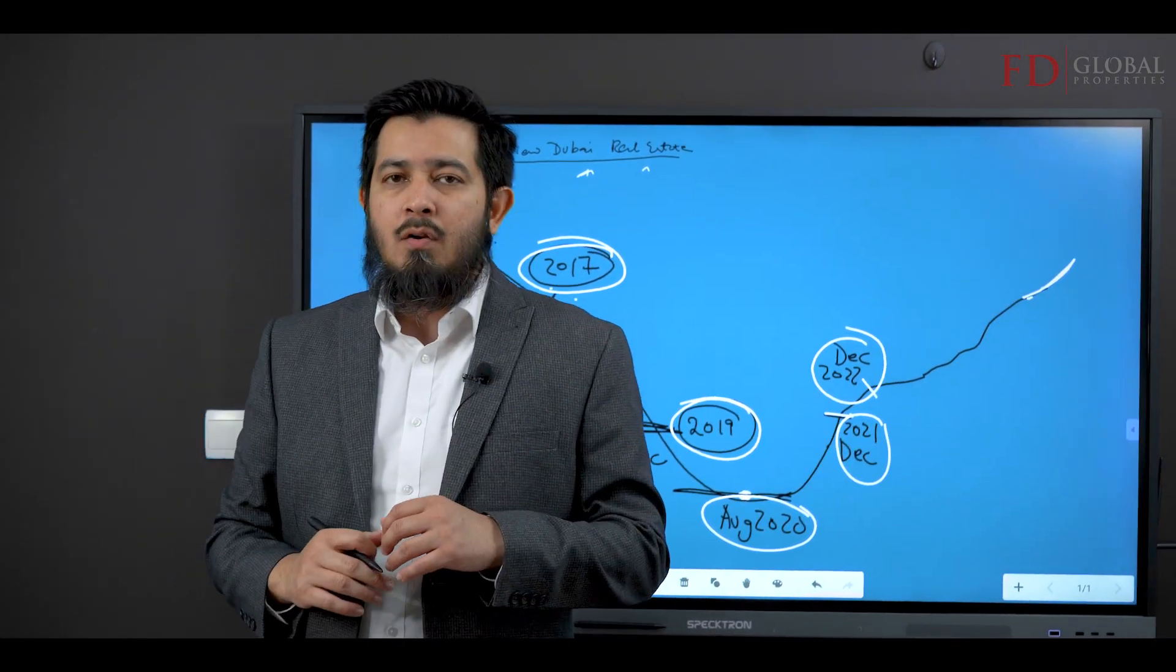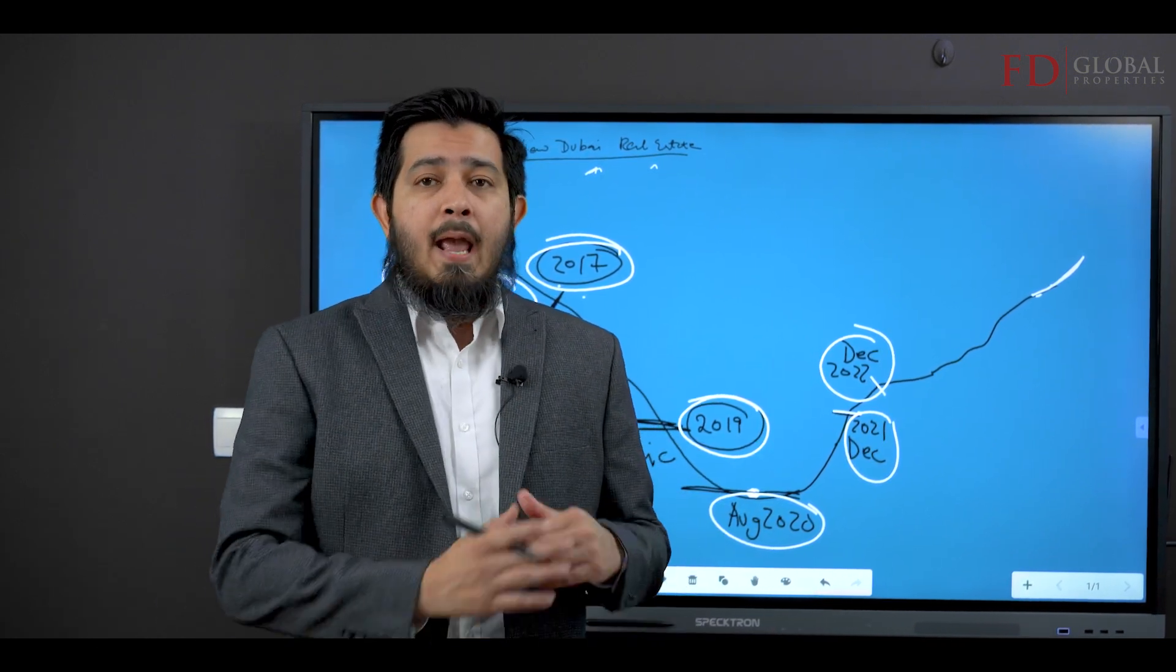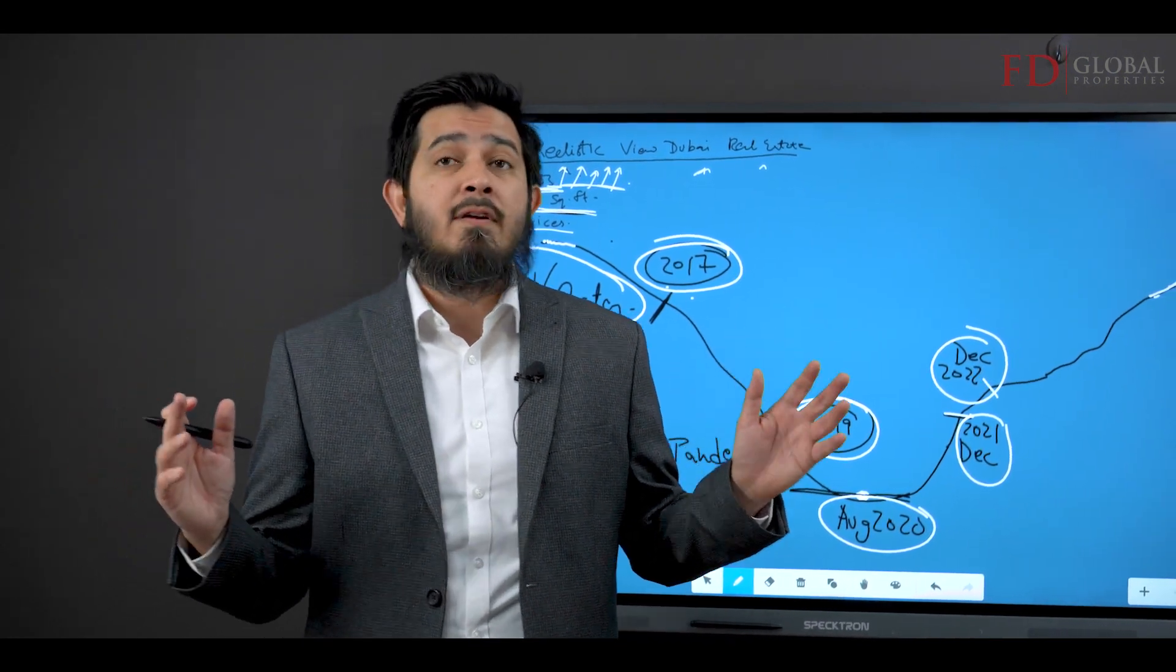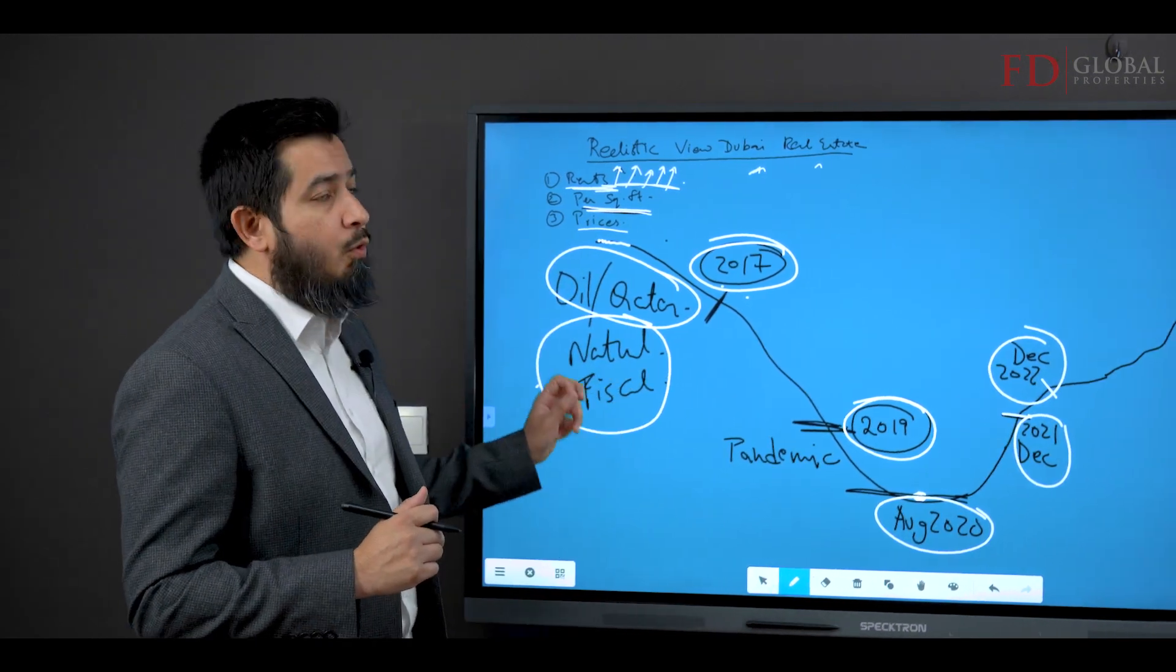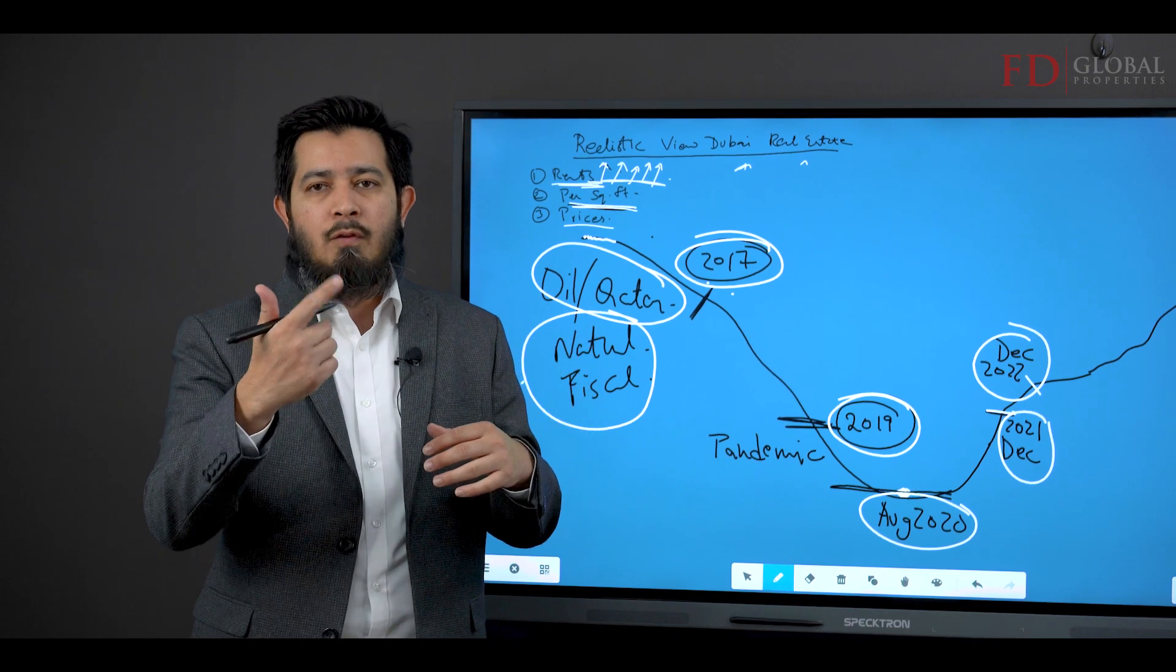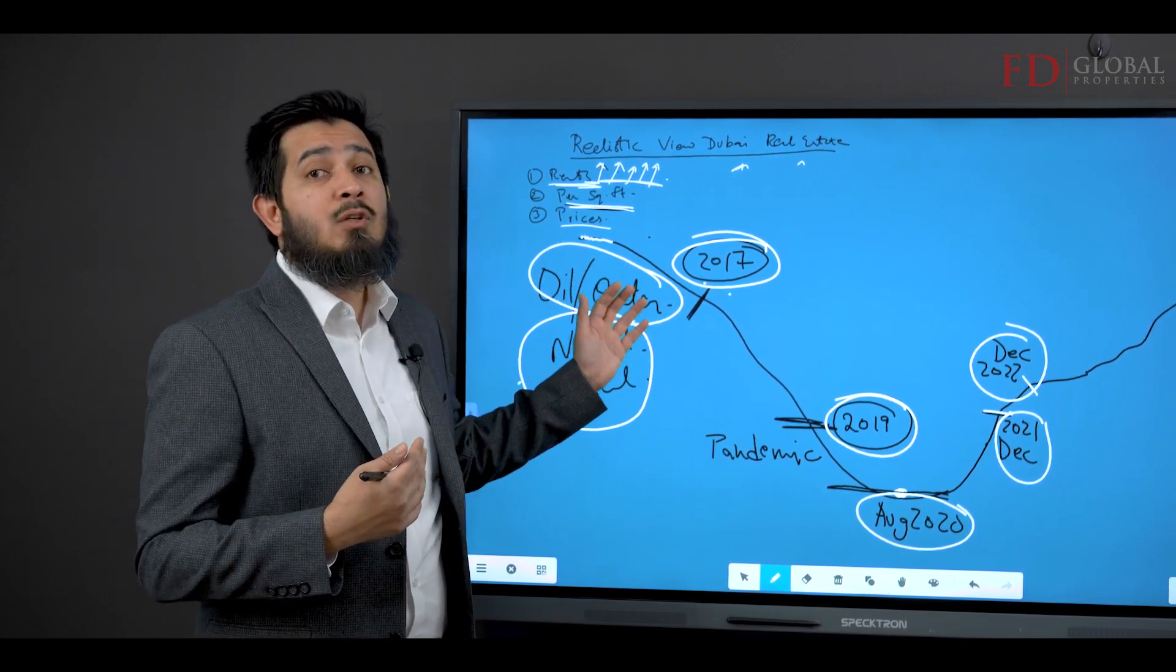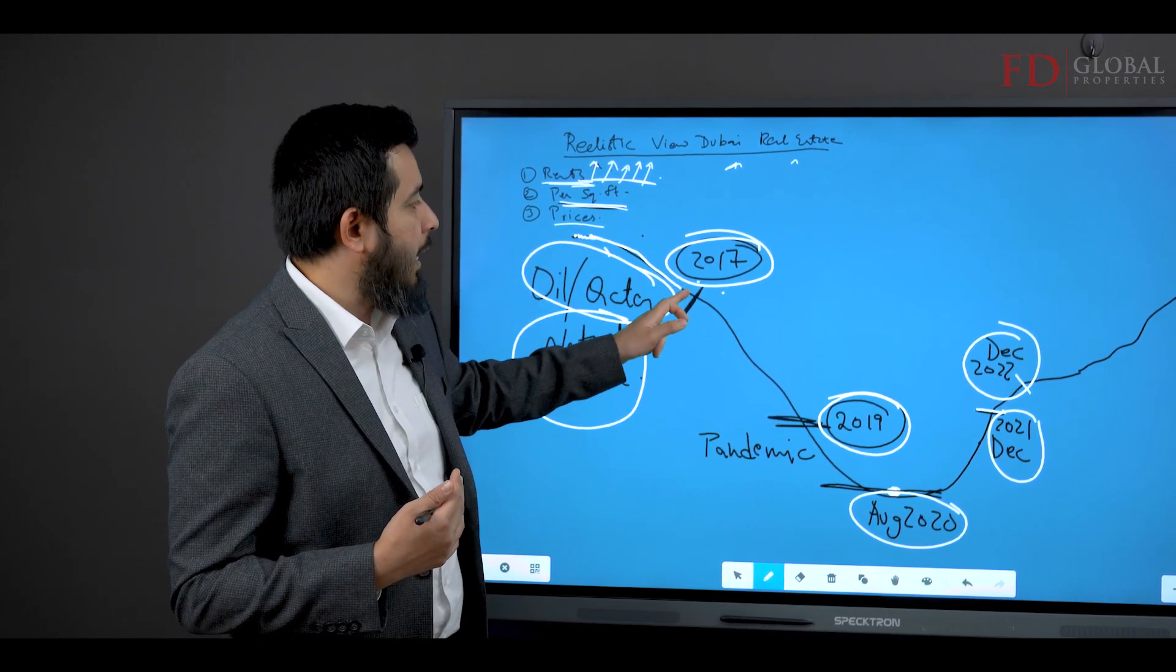Generally speaking, real estate and other financial markets or assets that are linked to finances expand exponentially for four, five, six, seven, 10 years, and then they contract generally. So this expansion had been going on or the recovery since 2009 through 2017, or you could say the recovery had started in 2012 and then we had prices going a little bit downwards.